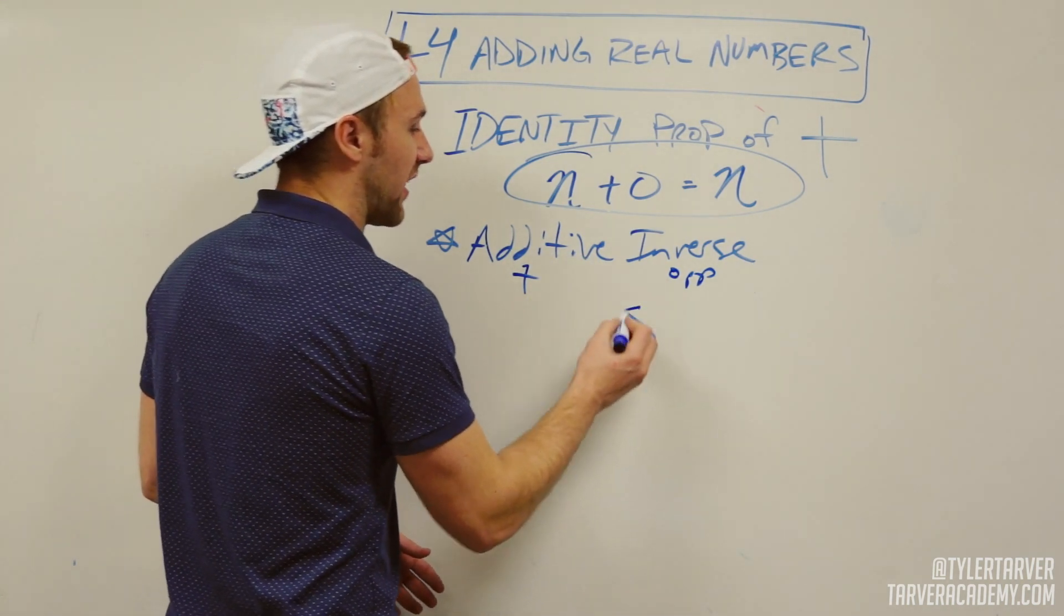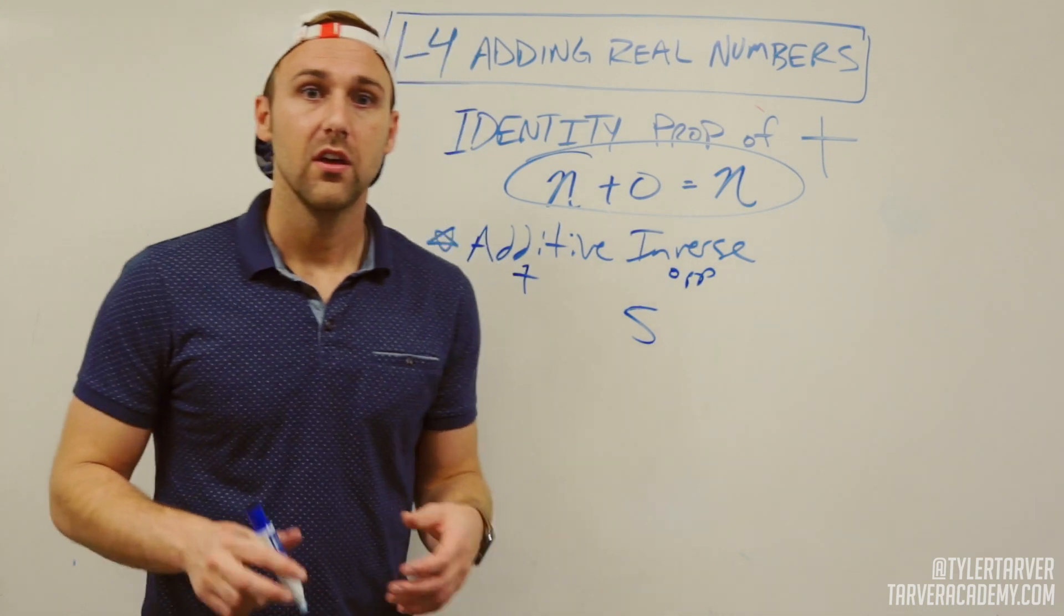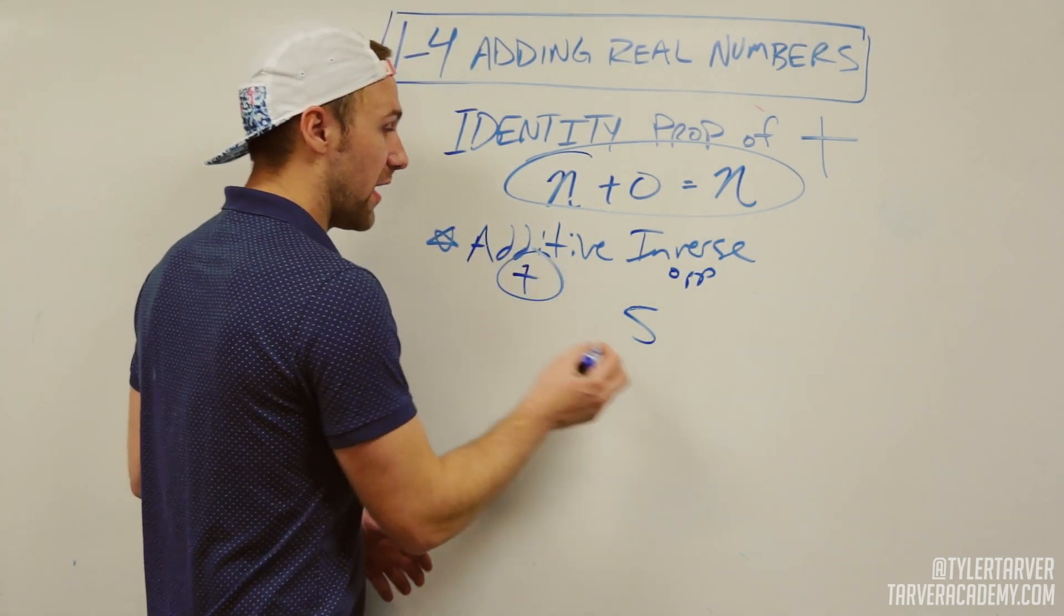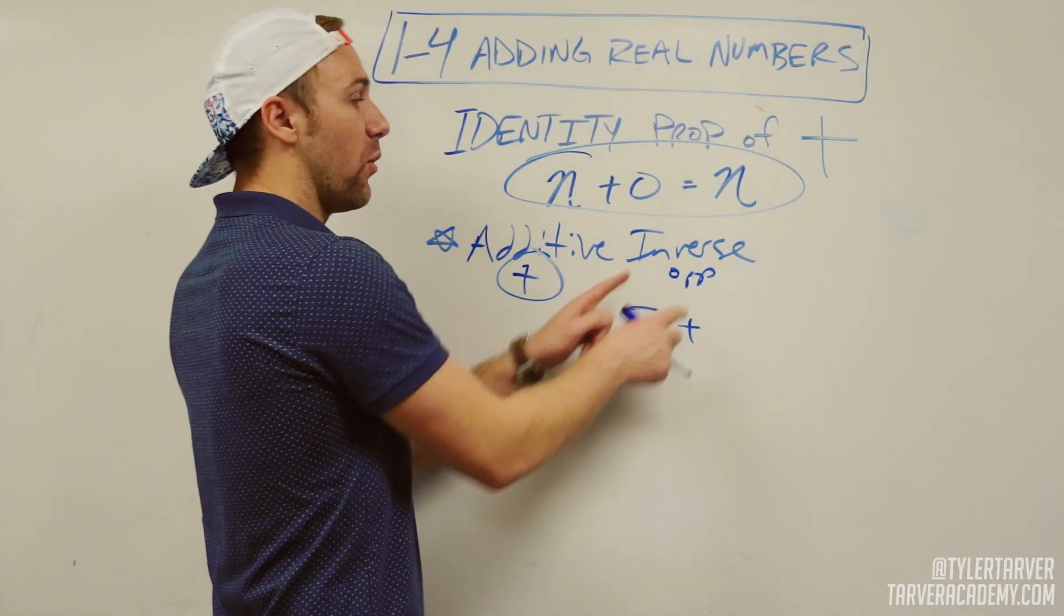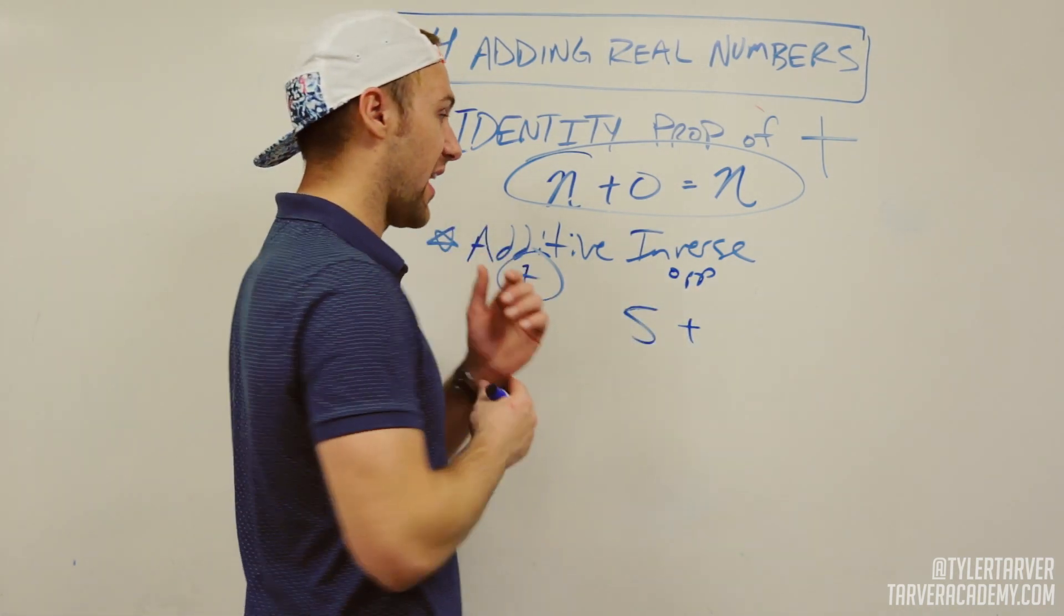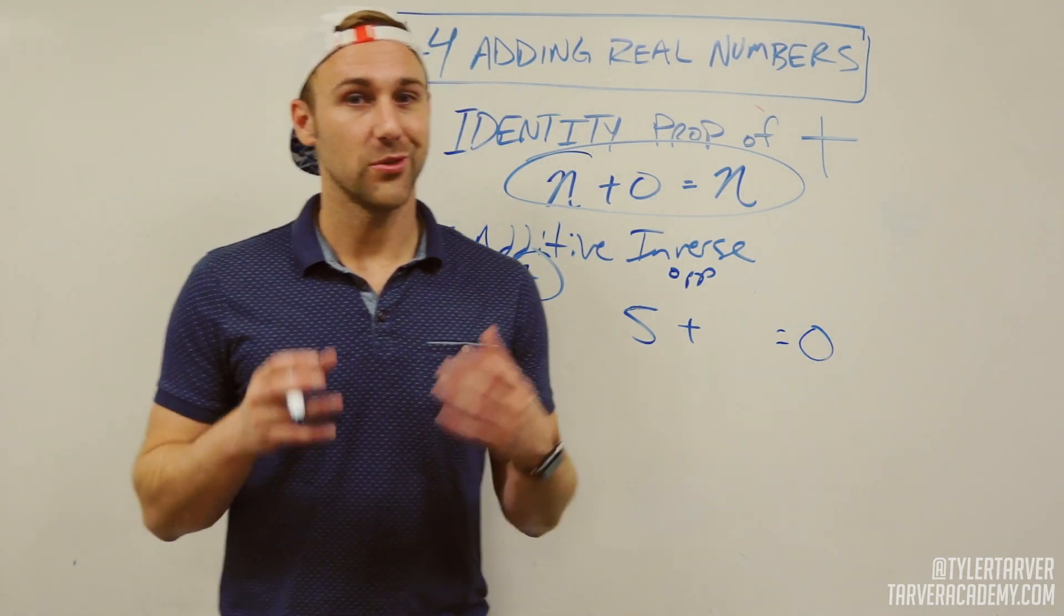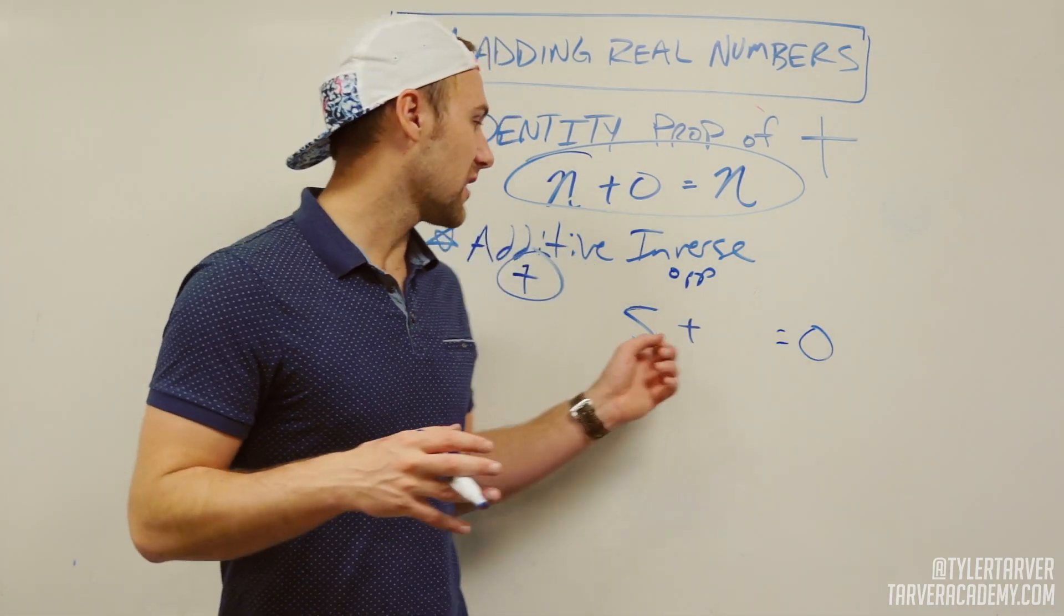So whenever you have like five, if you want to talk about the additive inverse, that means you want to add something to it, and we want it to be the opposite of that. So I want it to equal zero when I'm done. Think to yourself, what's the number that's the opposite of five?